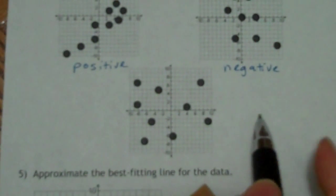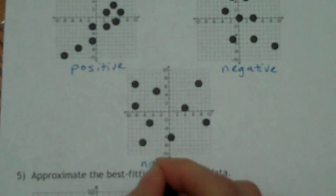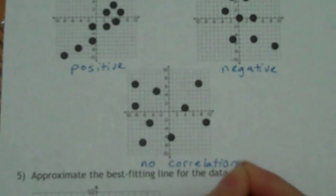And then the last one would be, that's right, no correlation. So those are the three different types that we're looking at.